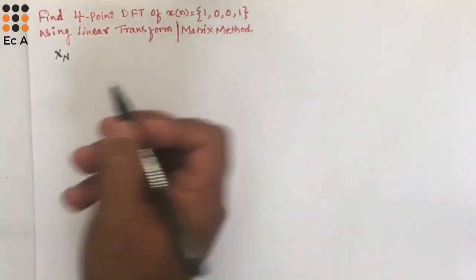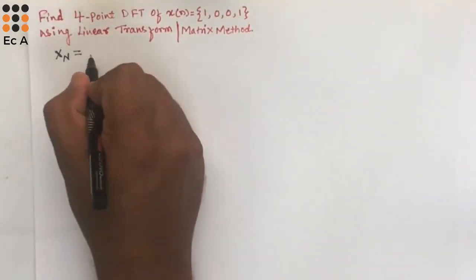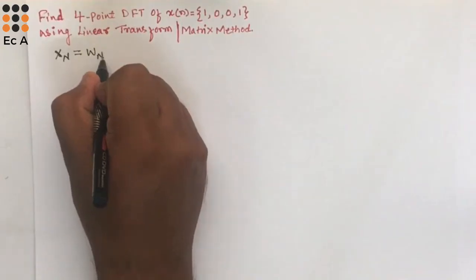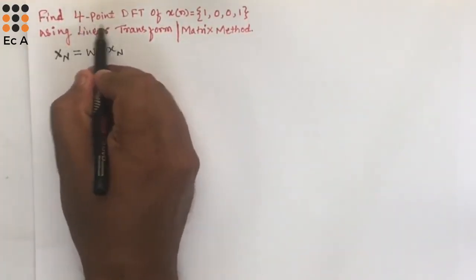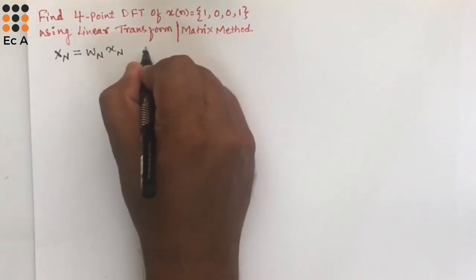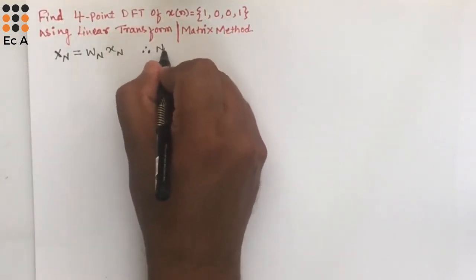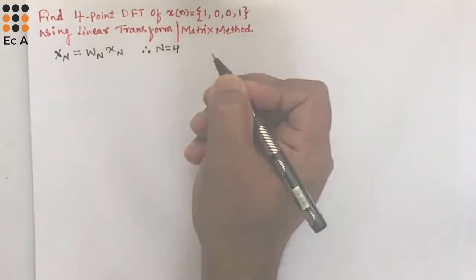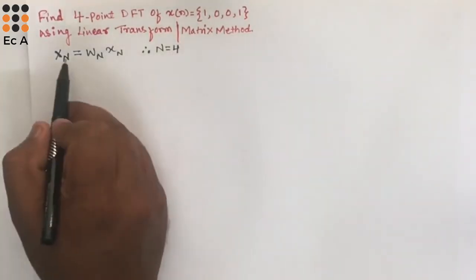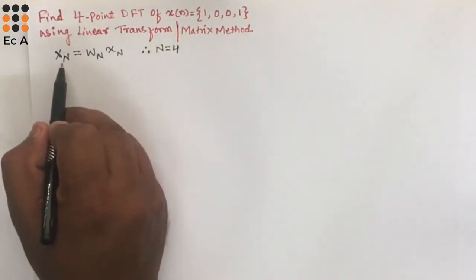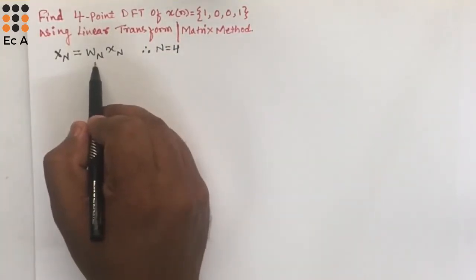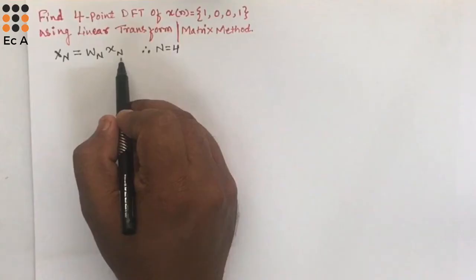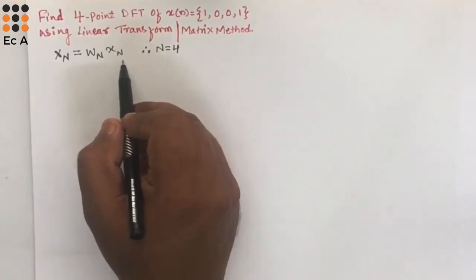We know DFT can be calculated using X(k) = W_N · x(n). Here they have given a 4-point DFT, so N = 4. We need to write a 4×1 matrix for X(k), a 4×4 matrix for W_N, and again a 4×1 matrix for x(n).